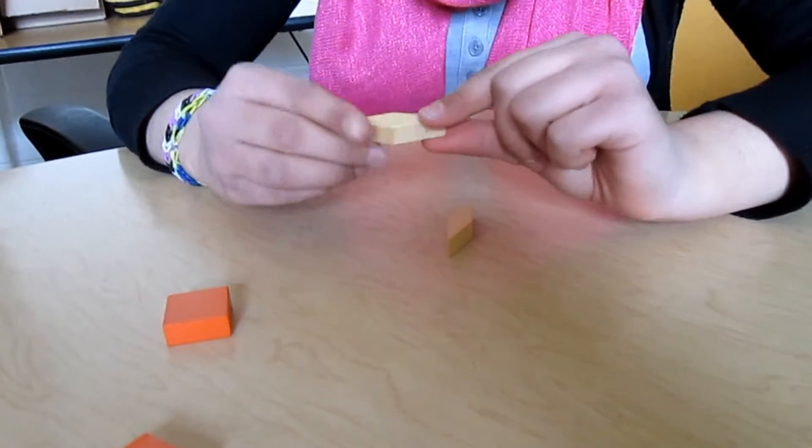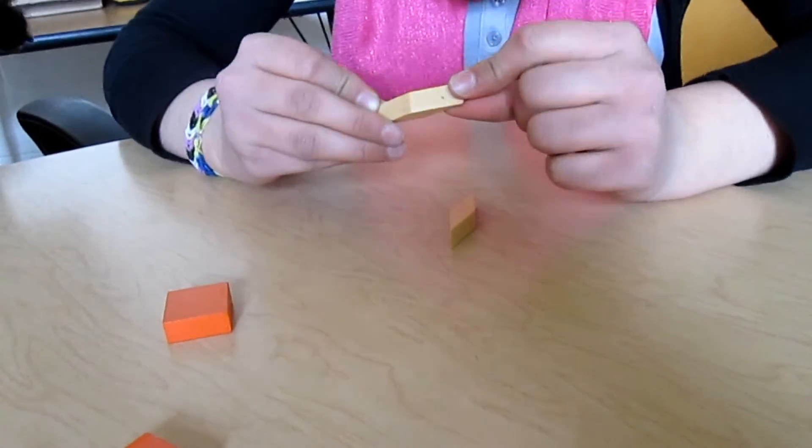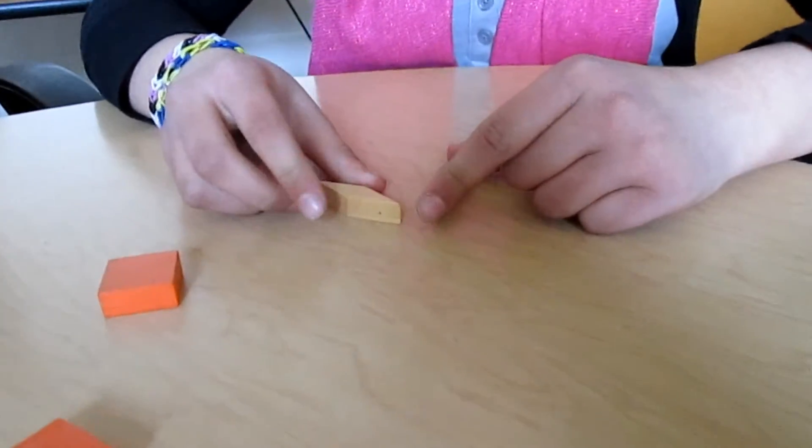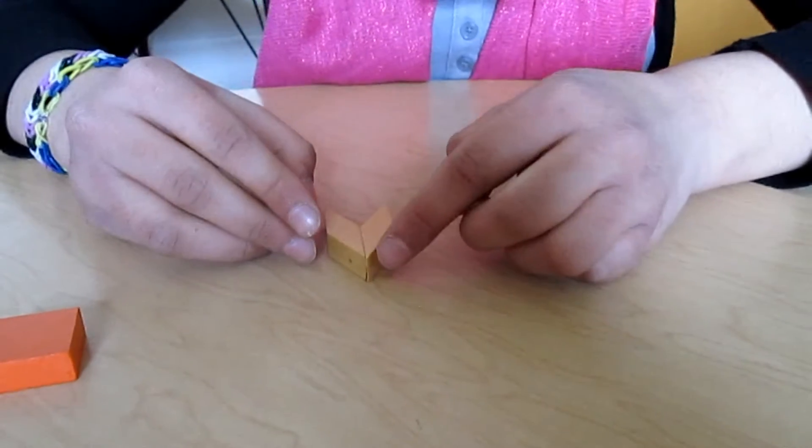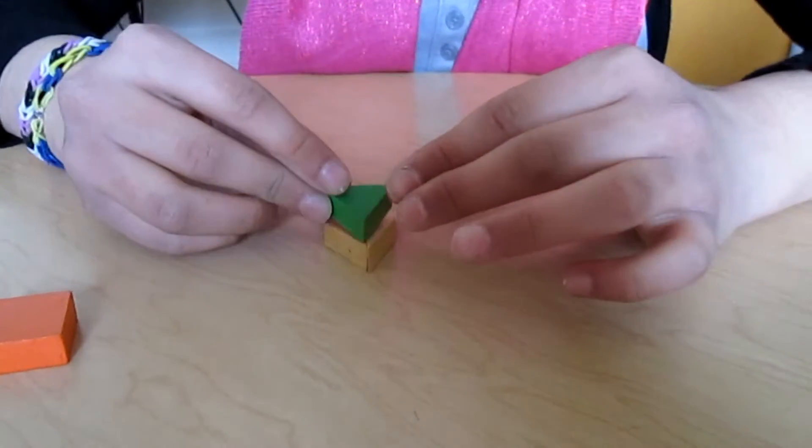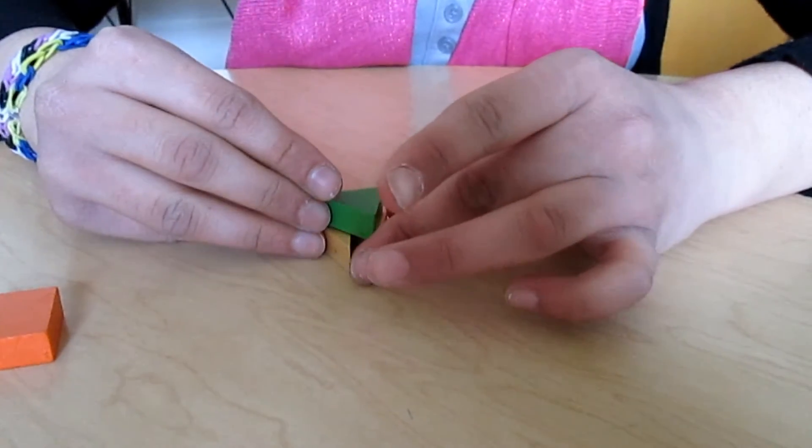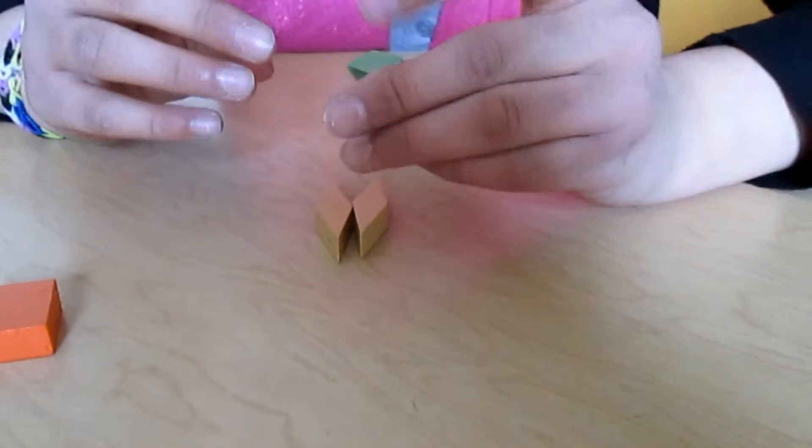So these two vertices right here are 30, and over here are 30, so if you attach it together, you'll get 60, and then one of these, you'll get 60 degrees. So this is 60 degrees.